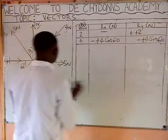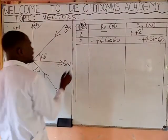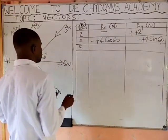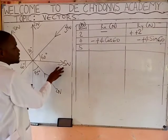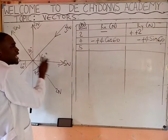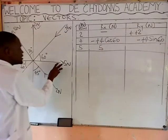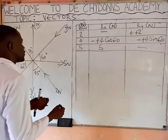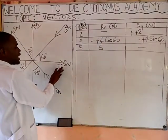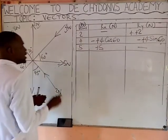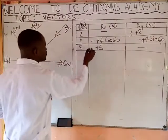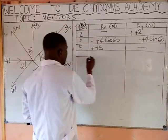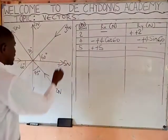Now we are done with that vector. Moving to vector 5: it is located entirely on the x-axis, so it has no relationship with the y-axis — nothing goes there. The Cartesian axis sign is positive, and the arrow is pointing outward, so we put plus. Underline and move to the next.